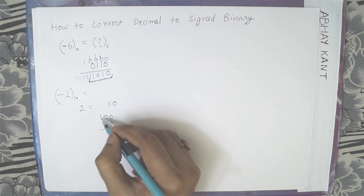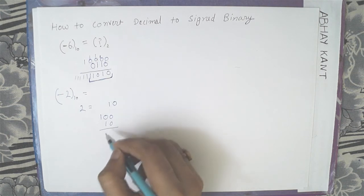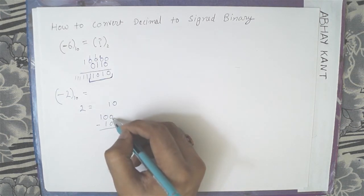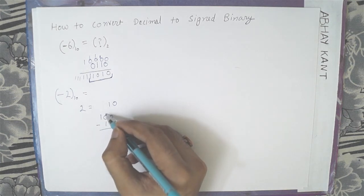So negative 2 is calculated by minus 1, 0, 0 minus 1. So 0 minus 0 is 0, 0 minus 1 is, we can't say. So we take borrow from here.